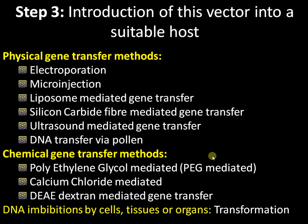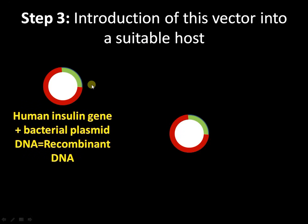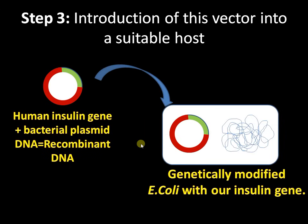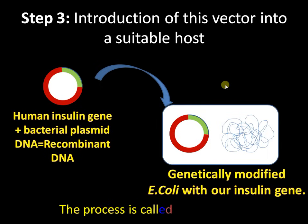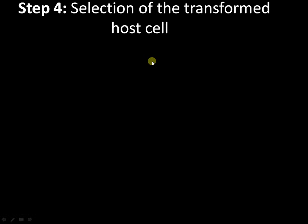Chemical gene transfer methods include PEG-mediated gene transfer, calcium chloride-mediated gene transfer, and Agrobacterium-mediated gene transfer. Certain cells like bacteria are also capable of taking up genes from the surroundings — a process called transformation. Now we need to introduce the insulin gene, incorporated in the vector, into a host. Most often the host is a bacterial cell, as it is simple to manipulate and E. coli is well understood. I have introduced the vector with the gene of interest into the bacterial cell. Now we have a genetically modified E. coli with our insulin gene inserted. Step 3 — transformation — is complete.